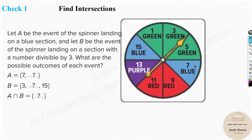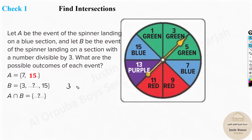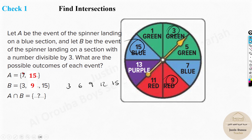Please try this by yourself and then continue the video. In this problem, A is the event of the spinner landing on blue — there are two blue sections, 7 and 15 — so A = {7, 15}. B is the event of the spinner landing on a section with a number divisible by 3, meaning multiples of 3: 3, 9, and 15. So B = {3, 9, 15}. The only common term is 15, so A intersection B = {15}.